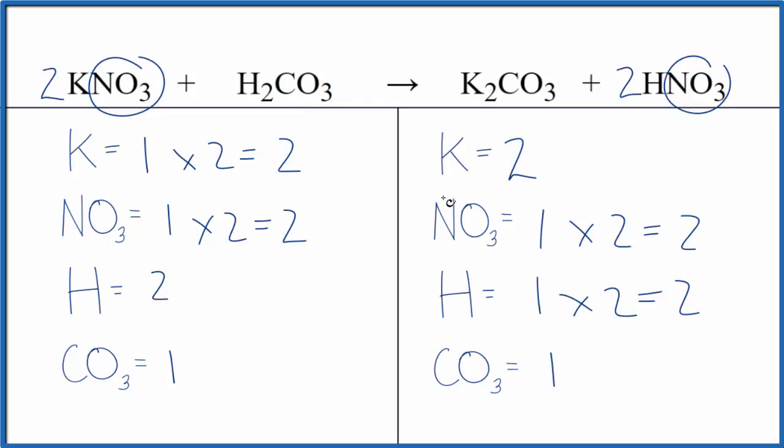If you want to know the type of reaction here, it looks like the potassium and the hydrogen, they're just switching places. So this is a double displacement reaction. That's the type of reaction.